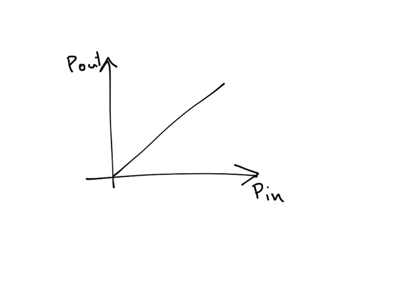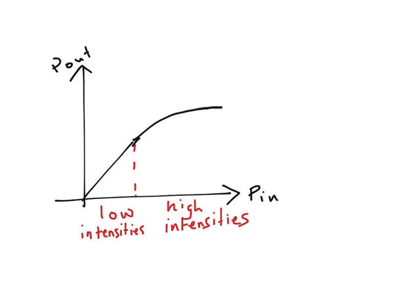If we try this for different values of power, we will expect that the relationship of Pout and Pin is linear. However, this is only true for low intensity values. For higher intensity values, it is not linear. This is known as the Kerr effect.